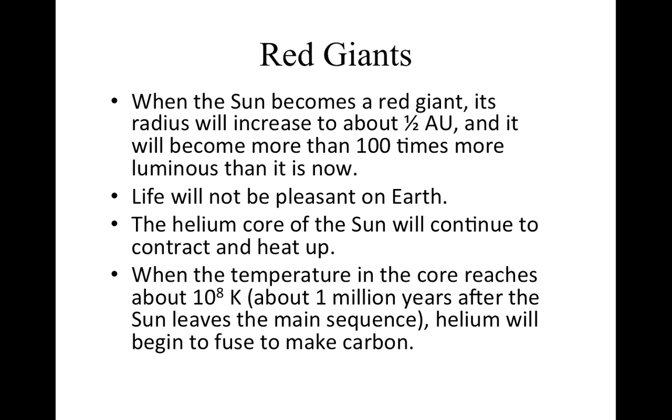So when the Sun becomes a red giant, its radius will increase to about a half an AU, about half the distance from the Earth to the Sun, and it will become more than 100 times more luminous than it is now. At that point, life will not be pleasant on the Earth. It will become extremely hot. The oceans will boil, and it will be very difficult for life as we know it to continue.